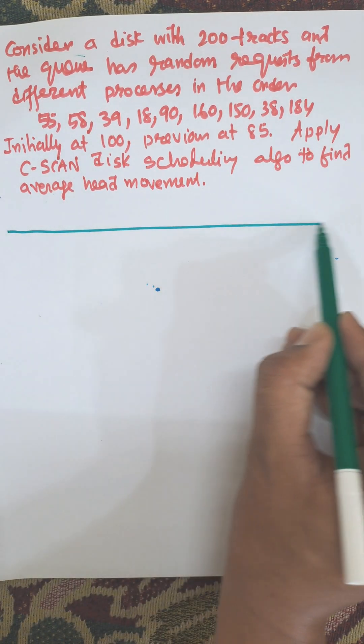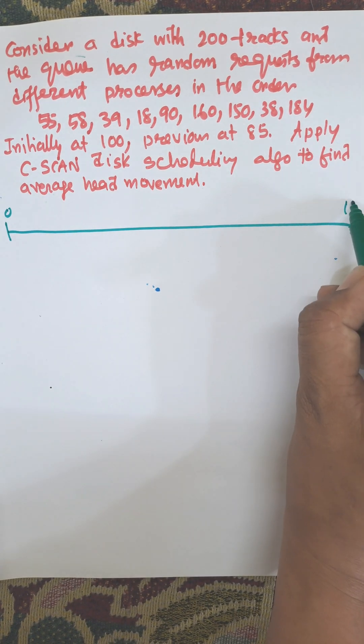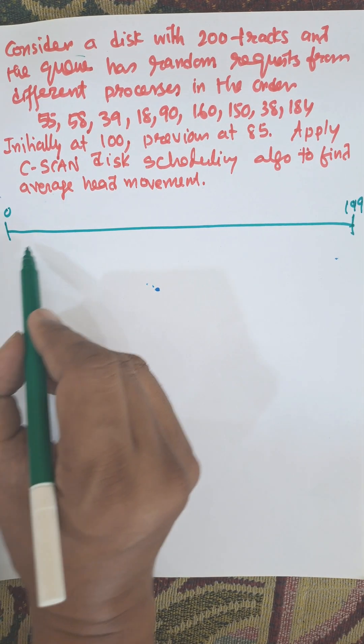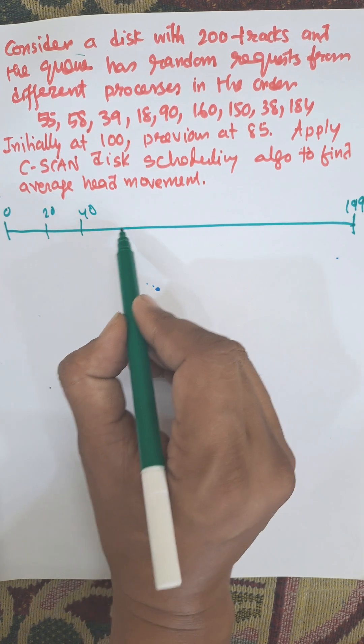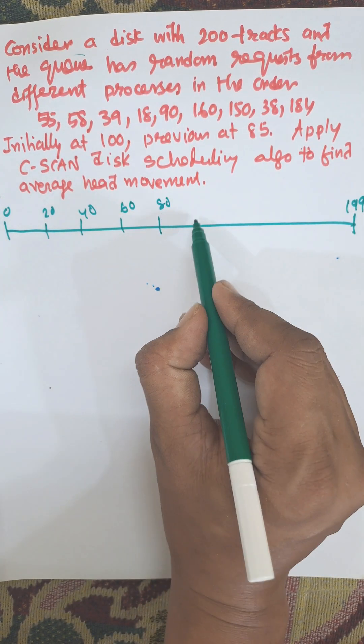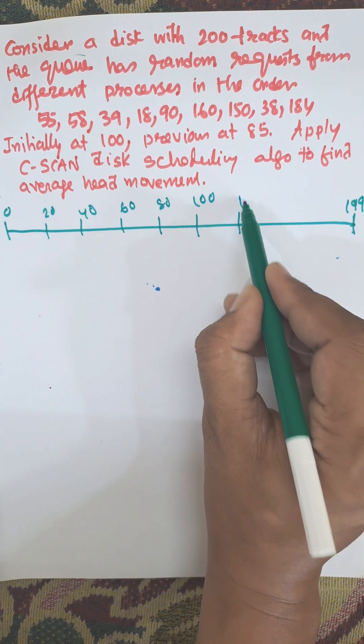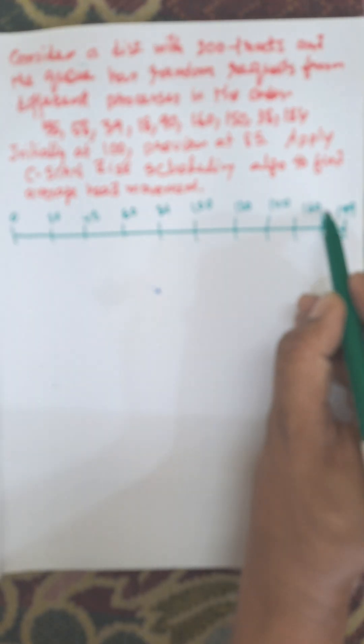First of all we need to draw the total number of tracks - 200 tracks, this is up to 199. We divide this track as 20 gap, we can use 10 gap also or 30 gap also. This one is 100, 120, 140, 160, 180 and so on.